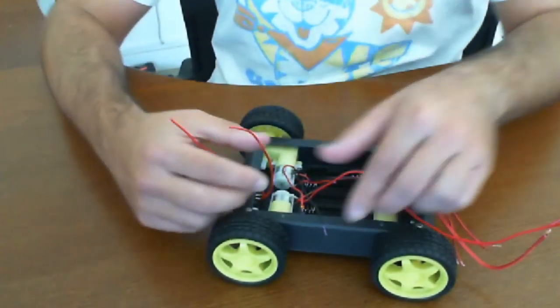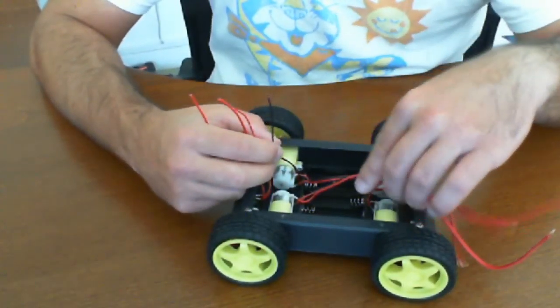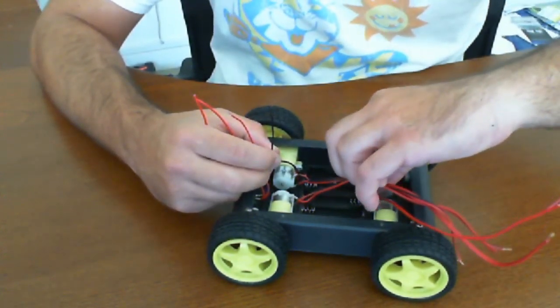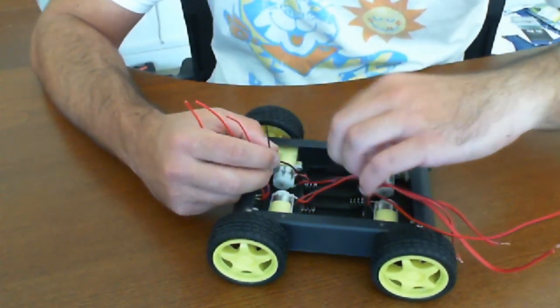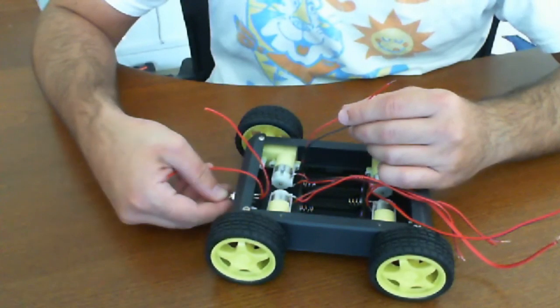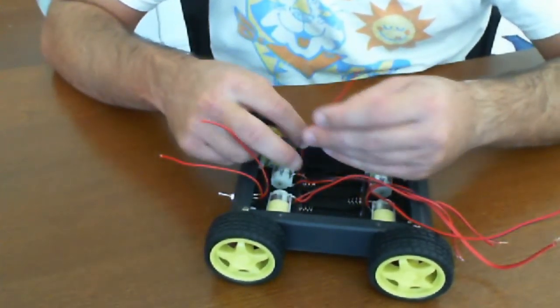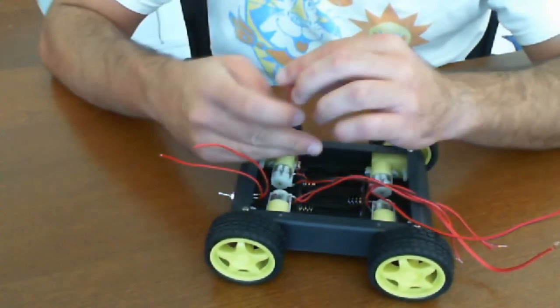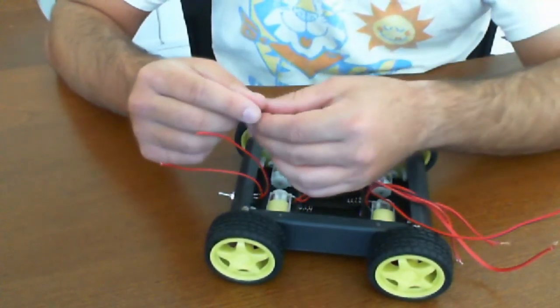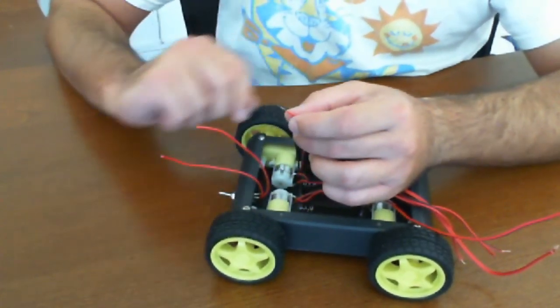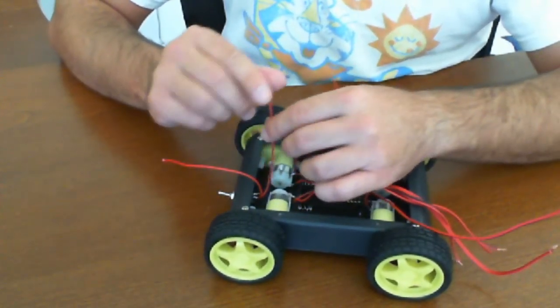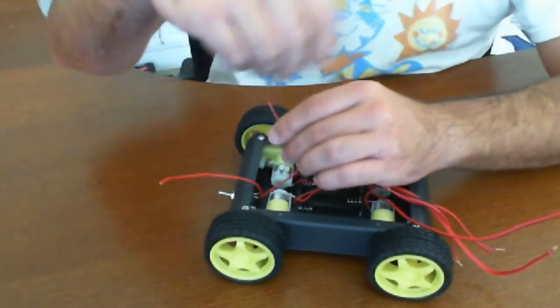We're back and we're going to get ready to wire this up. We're not going to wire up the motors just yet because we don't have the board in place, but we're actually going to wire up the power switch to the battery pack. We're going to take the red wire coming from the battery pack, which we've already pre-stripped here, and connect it to the middle wire on the switch.